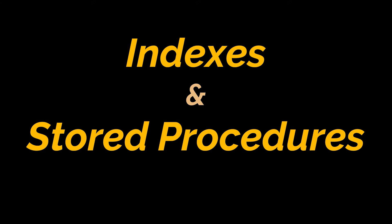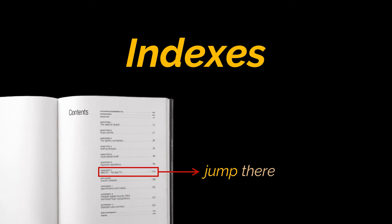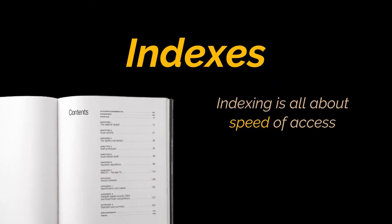An index in a database is similar to an index at the back of a textbook, which will help you find stuff in that book. Let's say I have a thousand page book about programming languages, and I want to look up the section about Java. What a normal person would do is search in this book's index, and this index will tell that the section he or she is looking for is at page 468, for example. This person could have found the Java section by going through the pages one by one, but it would have taken much more time.